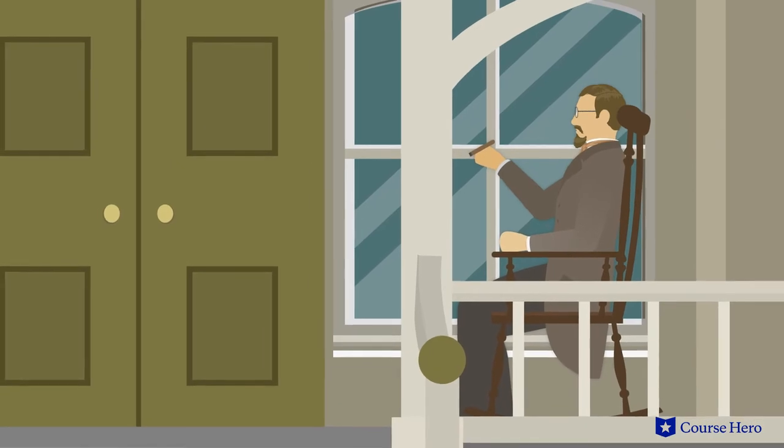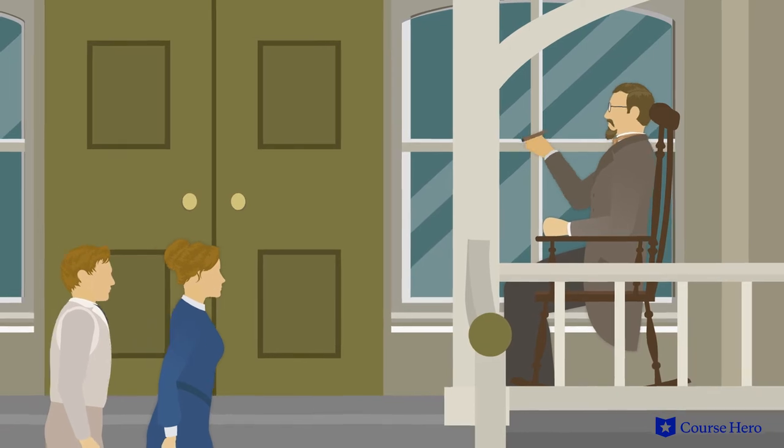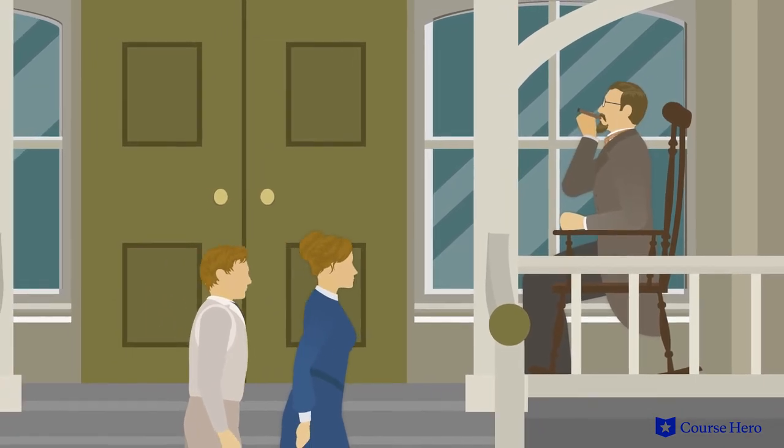Mr. Pontellier begins to smoke a cigar and watches as his wife Edna and Robert Lebrun return from taking a swim at the beach and approach the cottage.